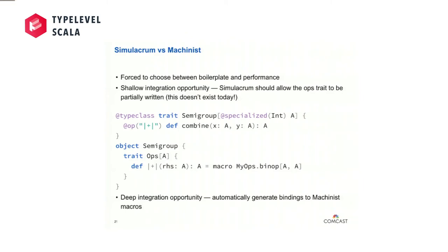Unfortunately, we have Simulacrum and we have Machinist and they don't quite integrate. I think forcing this choice is a bit false — we shouldn't be making people trade off boilerplate for performance. I think really to make type classes successful we need to solve this at the root. I at least have two different options on how we can solve this.